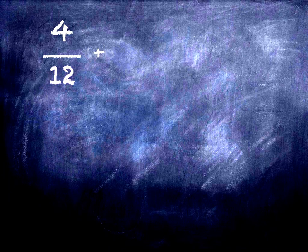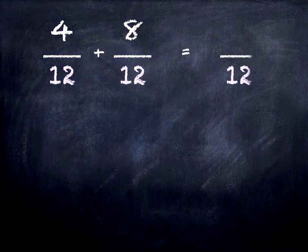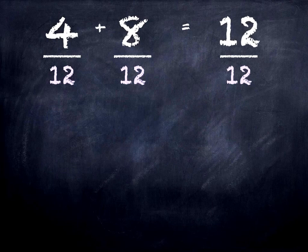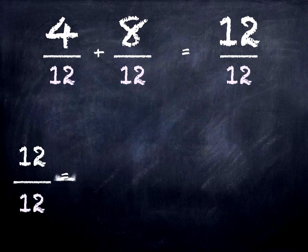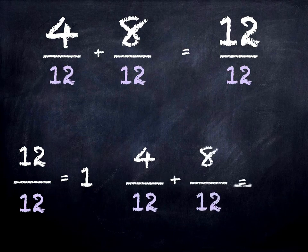Four twelfths plus eight twelfths is how many twelfths? Four plus eight equals twelve. And we know that twelve twelfths equals one.